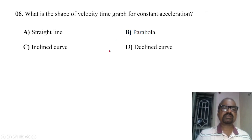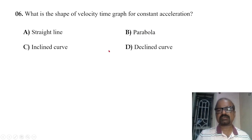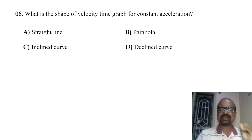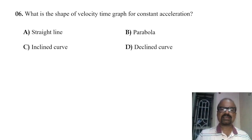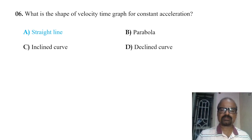What is the shape of the velocity-time graph for constant acceleration? When acceleration is constant, the velocity-time graph is a straight line — inclined, not parallel to the axis.